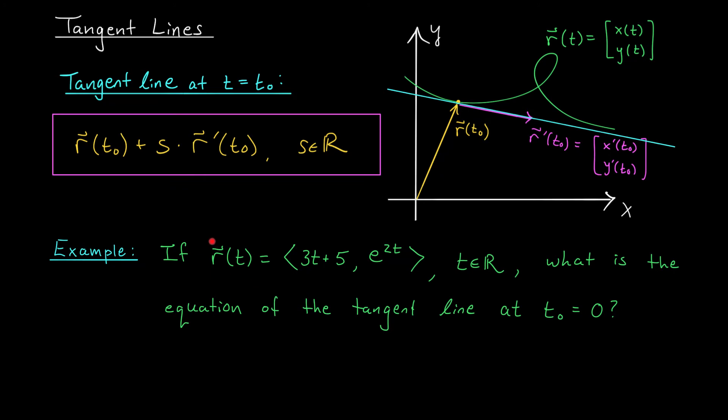Suppose we're dealing with this vector function, r(t), and we want to know the equation of the tangent line at t₀ equals 0. According to my equation, I'm going to need to know r(t₀) and the derivative r'(t₀). So starting with r(t₀), we have to plug in t₀ equals 0 to this vector here. That's going to give us the vector r(0) equals ⟨5, 1⟩. That's a point on our tangent line, but we still need the direction vector.